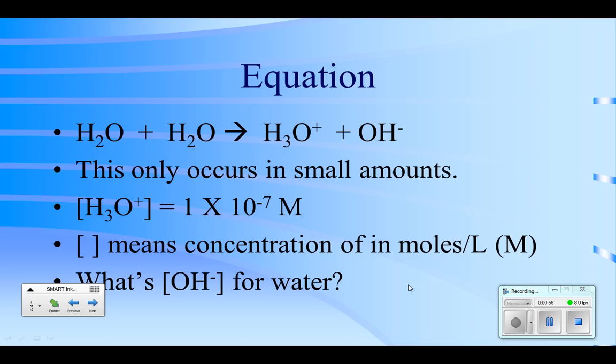Here's the equation for the self-ionization of water. I've written it in the Bronsted-Lowry model here. Remember that whenever we see the hydrogen and the hydronium ions, those are the same thing. So here it is: water reacting with water to produce the hydronium ion and the hydroxide ion. And as I said, it only occurs in very small amounts.